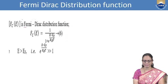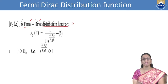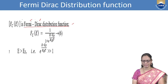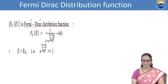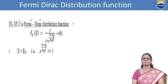Fermi and Dirac are two scientists who collaborated to explain the distribution of charge carriers and give a function for how they occupy different energy levels. The Fermi-Dirac distribution function is F(E) = 1 / [1 + exp((E − E_F) / k_B T)]. When E is greater than E_F, the value exp[(E − E_F) / k_B T] is much greater than 1.